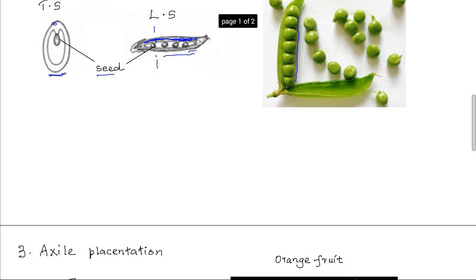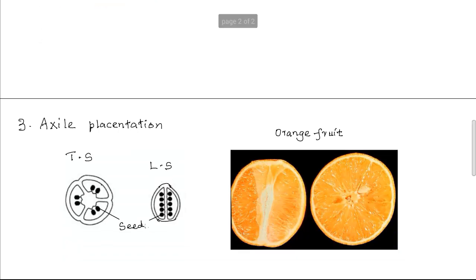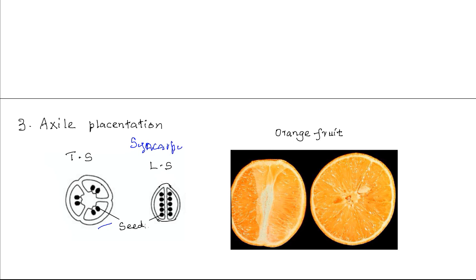Thirdly, we have axial placentation. In axial placentation, there are several carpels that are fused. Axial placentation arises from a syncarpous gynoecium in which several carpels fuse together to form a central placenta in the axis formed by the carpels. The placenta is located at the center, and for that reason axial placentation is also sometimes referred to as central placentation.